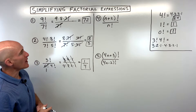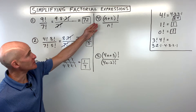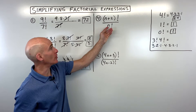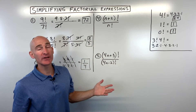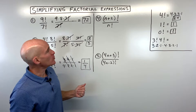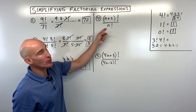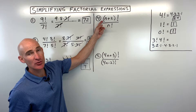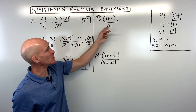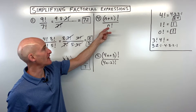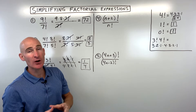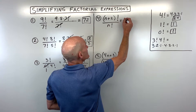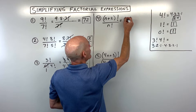For example number four, we're getting into variables: n plus two factorial over n factorial. We don't know what n equals, but n plus two is larger than n. Say if n was 10, this would be 12 factorial over 10 factorial. So I like to start with the larger factorial and count down — subtracting one each time to get the next smaller integer.